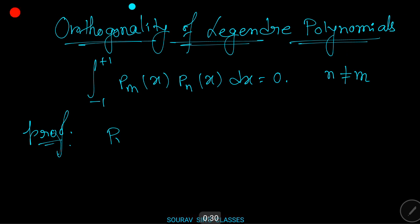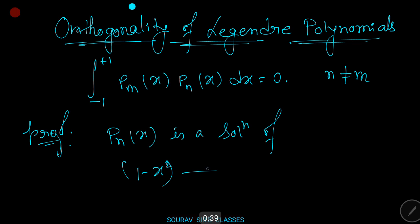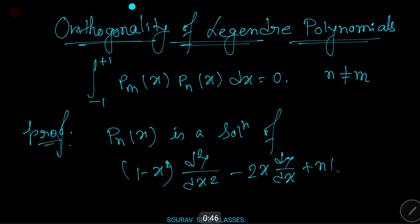First, Pn(x) is a solution of: (1 minus x squared) times d²y/dx² minus 2x times dy/dx plus n(n+1)y equals zero. This is equation number one.